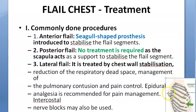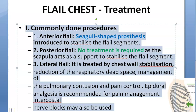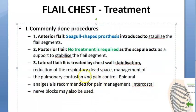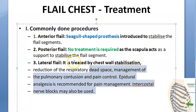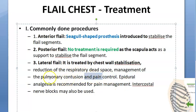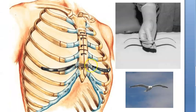Lateral flail chest is treated by chest wall stabilization, reduction of the respiratory dead space, management of pulmonary contusion, and pain control. Epidural anesthesia is recommended for pain management, and intercostal nerve blocks may also be given. Respiratory dead space is where air travels without gas exchange occurring, so reducing it allows more space for actual gas exchange.